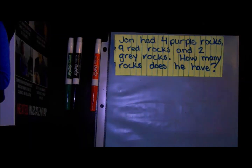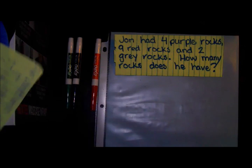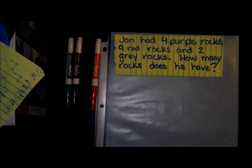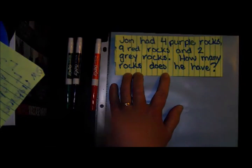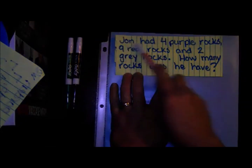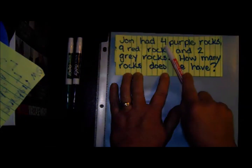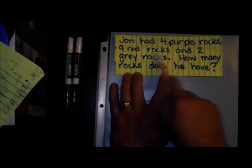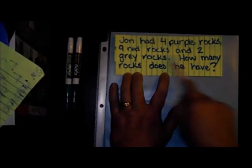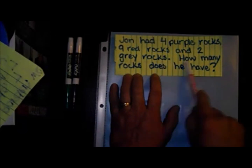Our first problem is about one of my favorite things — rocks. This story is about a boy named John. John had four purple rocks, nine red rocks, and two gray rocks. How many rocks does he have?